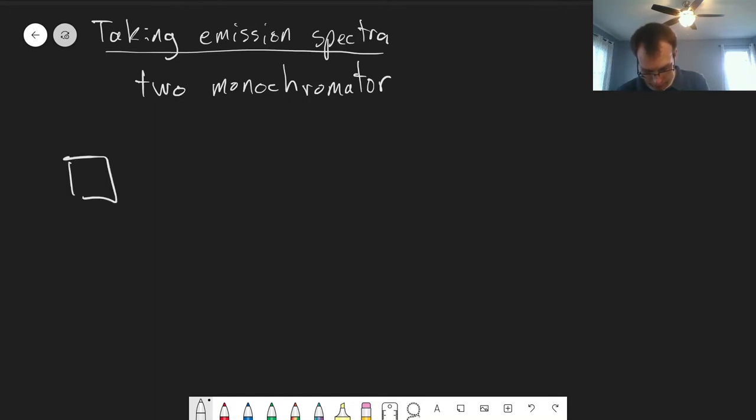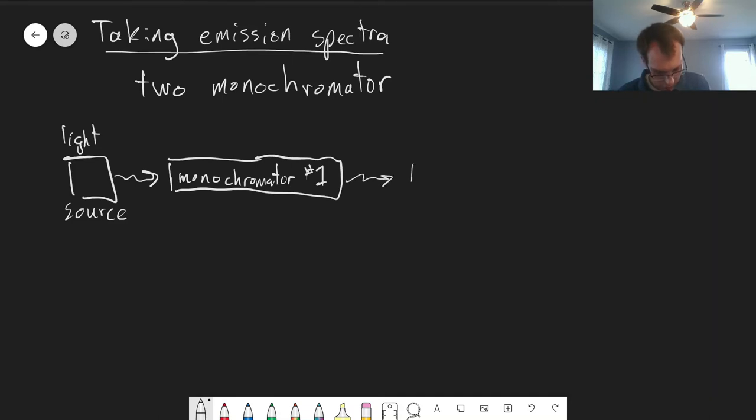So we still have a light source, and that light source is going to produce light that goes into our monochromator number one. And that'll pick the color of light that goes onto our sample.